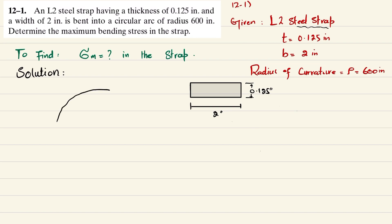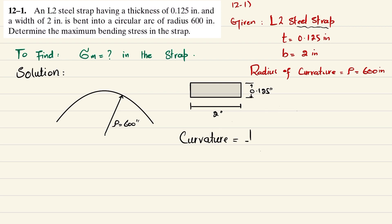The strap is bent into a circular arc. Let's say this is the bend and this is the center of the arc. The radius of curvature, rho, equals 600 inch. We use the curvature formula: 1 over rho equals M over EI, where M is the bending moment, E is the modulus of elasticity, and I is the moment of inertia. From this, the moment M equals EI over rho.